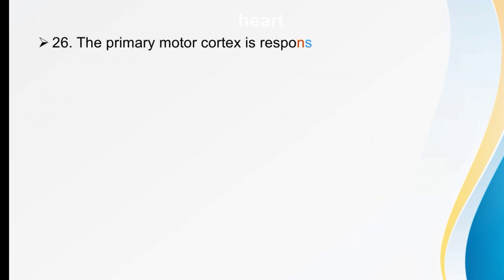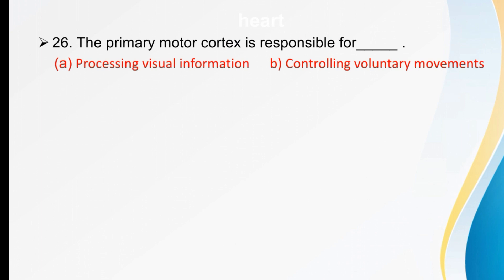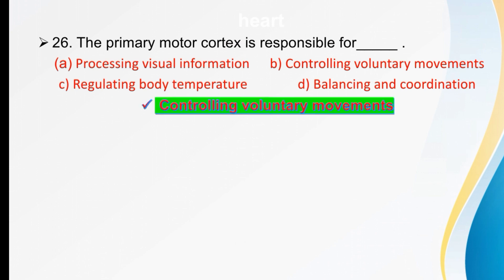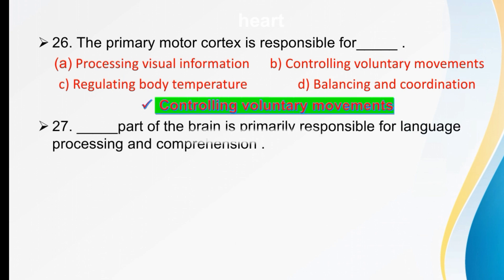The primary motor cortex is responsible for dash. Options are processing visual information, controlling voluntary movement, regulating body temperature, or balancing and coordination. The right option is controlling voluntary movements — the primary motor cortex is responsible for controlling voluntary movement.